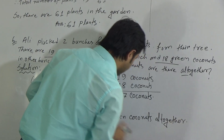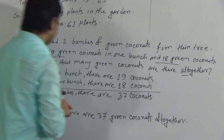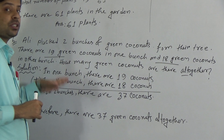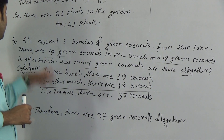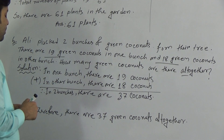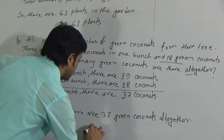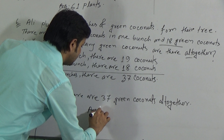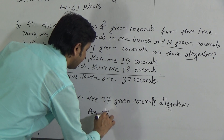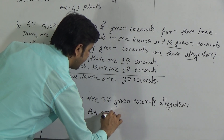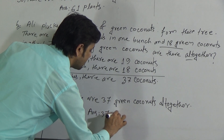I hope you have understood the solution of word problem 6. So the answer of this question is 37 green coconuts.